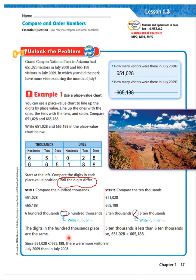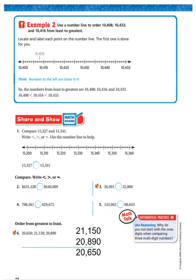The digits in the hundreds place are the same. Five ten thousands is less than six ten thousands. So, 651,028 is less than 665,188. So there were more visitors in July of 2009 than there were in July of 2008. Okay, awesome possums.